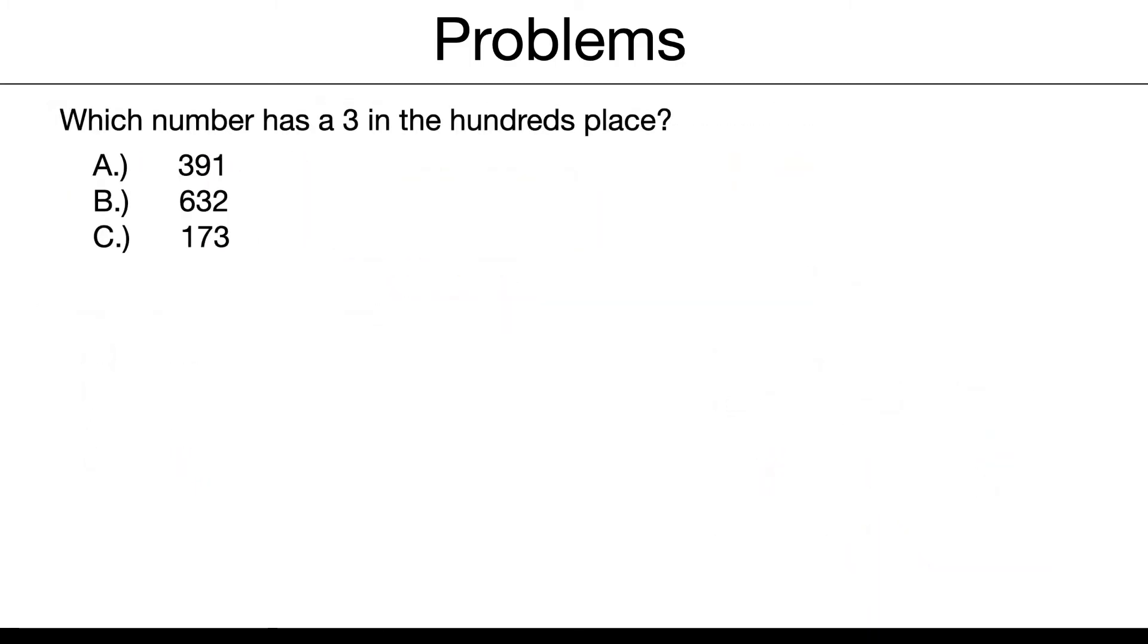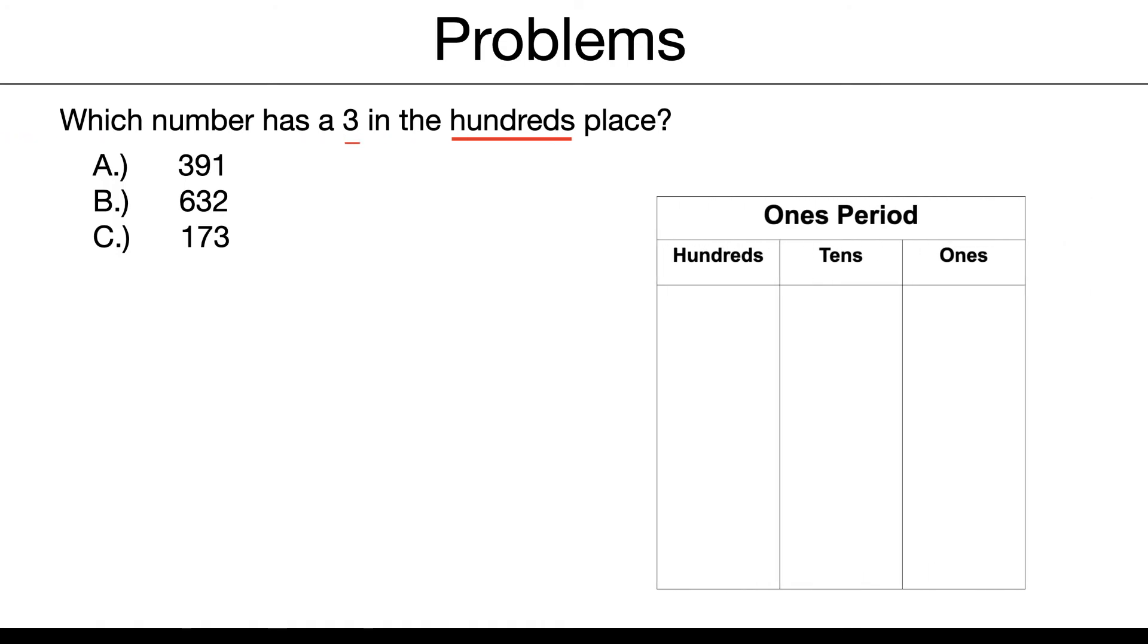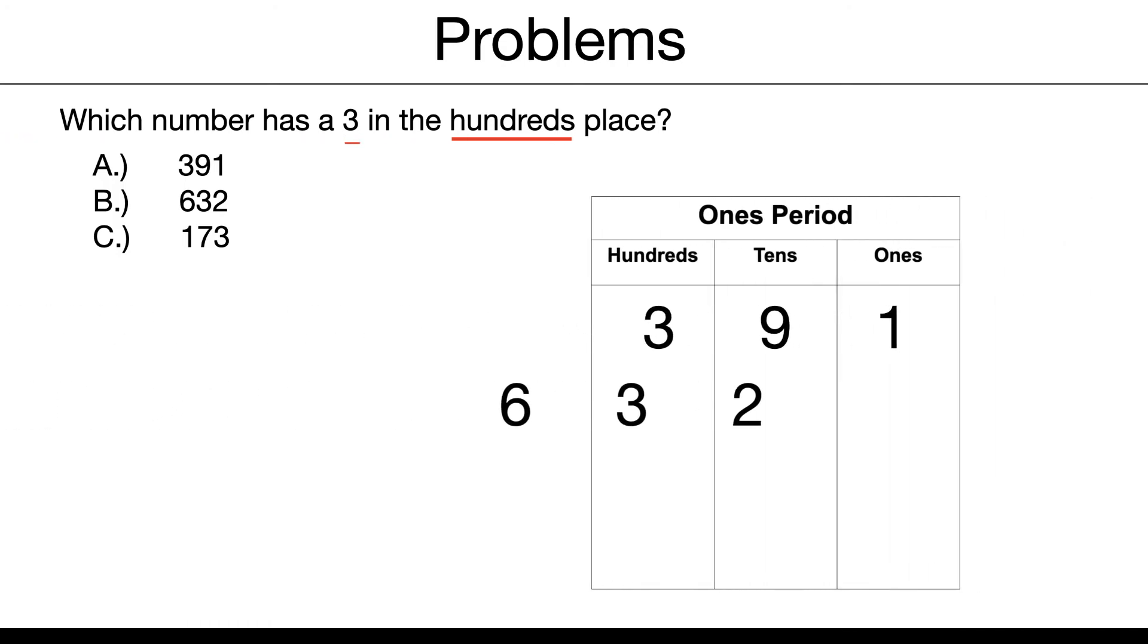Which number has a 3 in the hundreds place? Alright, so let's put that on a place value chart, our 3 numbers. And it said hundreds, right? And we're looking for the 3. That's that top number. So our answer is, in this case, 391.